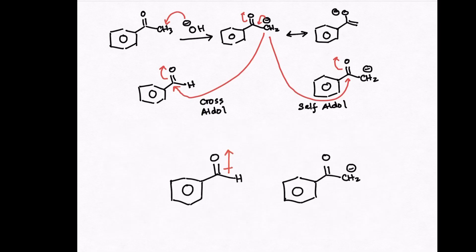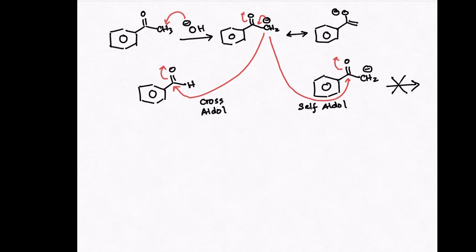Due to the electron density on the carbonyl in benzaldehyde, which causes it to be more reactive toward a nucleophile compared to the enolate, this reaction proceeds through a cross-aldol reaction pathway.